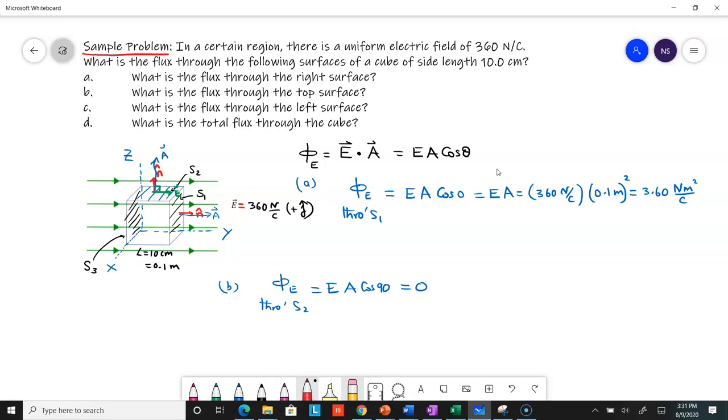For the left surface, the normal vector is the outward drawn normal, so this vector here. The area vector is opposite to the electric field vector.